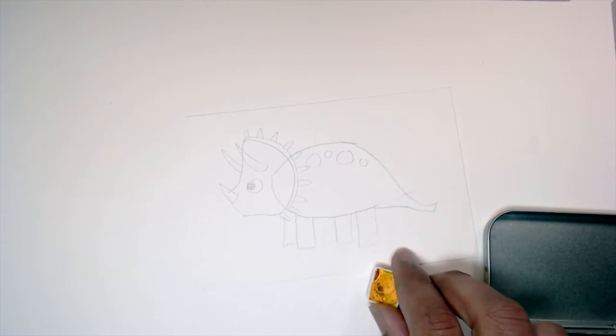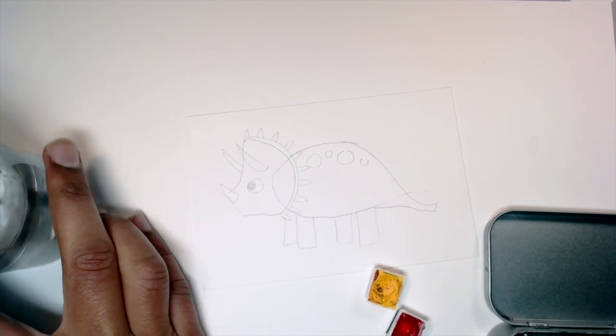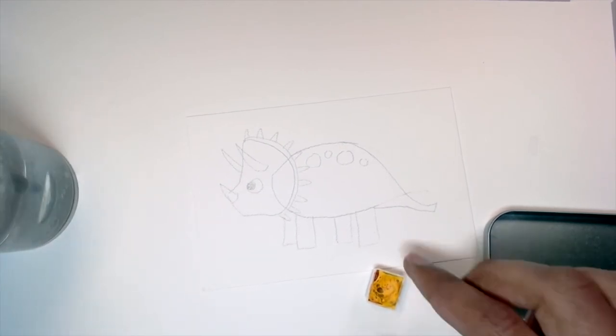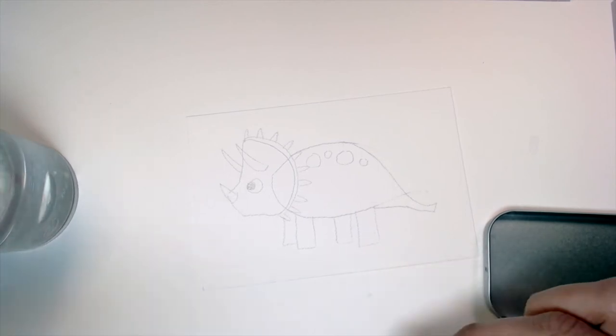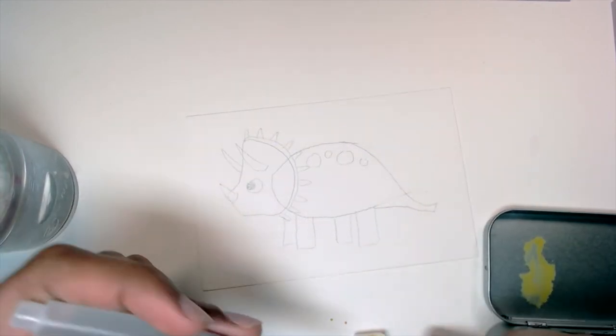I'm going to get my yellow and my red. And I'm going to mix a color. Actually, maybe I'll do, instead of yellow and red, I'm going to mix my orange using yellow and brown because I want it to be more on the tan side.